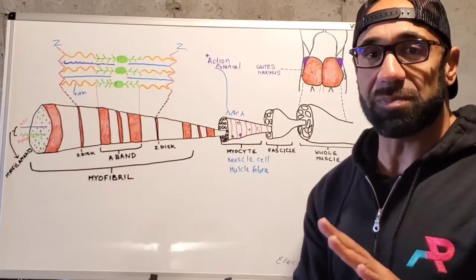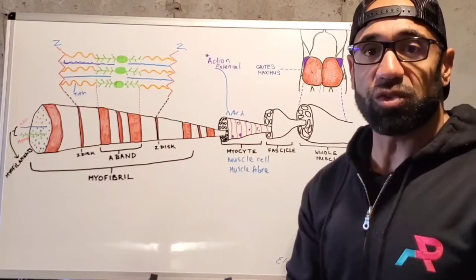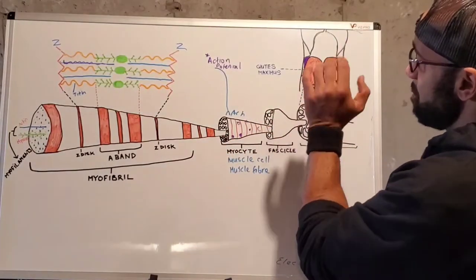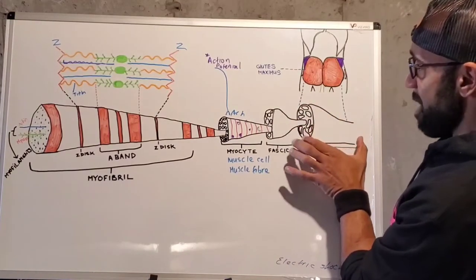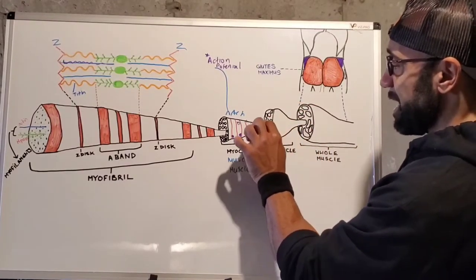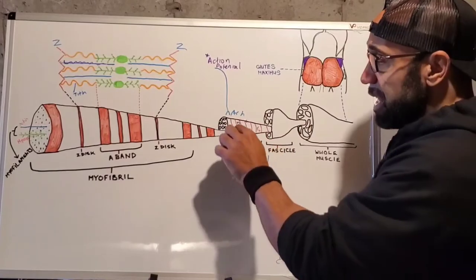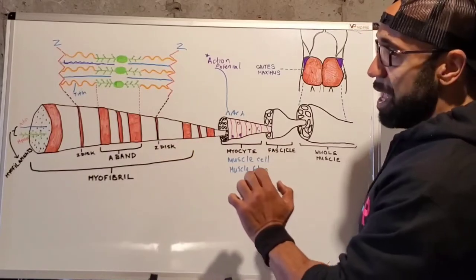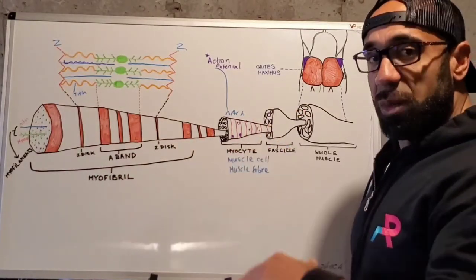Today we're going to talk about the gluteus maximus. Since it's one of the biggest muscle groups in the human body — you could use another muscle group like the latissimus dorsi, the bicep, or the pectorals — but we'll use the gluteus maximus. We'll take that muscle and break it down: the whole muscle, then the fascicle, then the muscle cell (myocyte or muscle fiber), then the myofibril, and finally the sarcomere, which contains the myofilaments — actin and myosin.